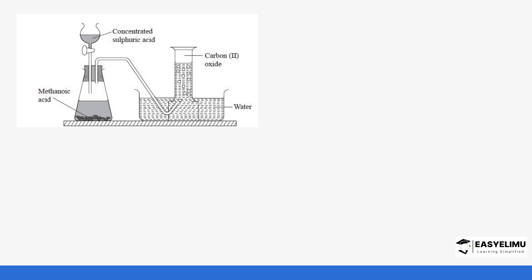Looking at the setup: the concentrated sulfuric acid is placed in a delivery funnel (or dropping funnel) and it is dropped into methanoic acid, and you can see carbon monoxide being produced. When methanoic acid is dehydrated — meaning water is removed, since dehydrating means we remove any elements of water — we produce carbon monoxide and water only.